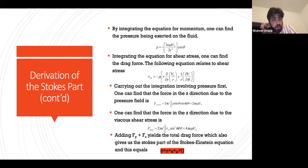Adding the force due to the pressure field and the force due to viscous shear stress yields the total drag force, which also gives us the Stokes part of the Stokes-Einstein equation: F = 6πaμu.